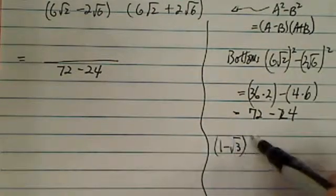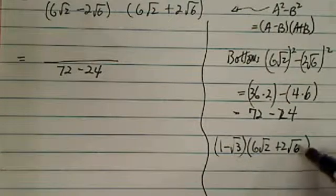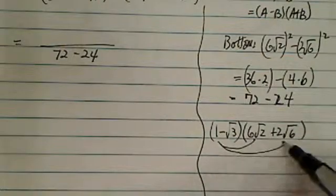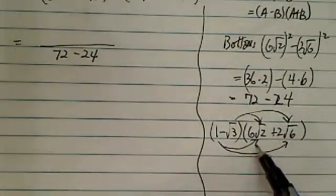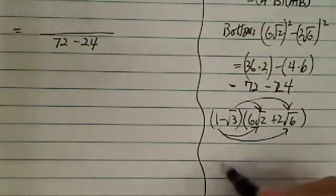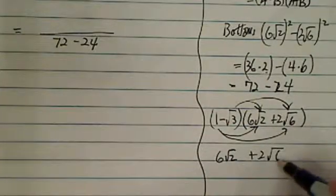1 minus radical 3 on top times 6 radical 2 plus 2 radical 6. It's not hard, but it's messy. So let's do it slowly and keep track of what we're getting for each term. 1 times 6 radical 2, I have 6 radical 2. And then 1 times that, I have 2 radical 6.